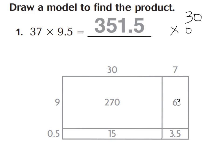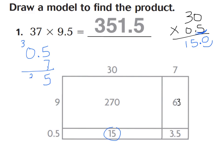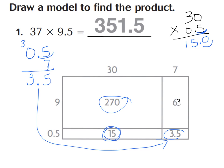9 times 7 is supposed to be 63, but my model shows only 6 — if yours does that, they might have made a typo, so just go ahead and make a little 3 right there. Our answer should have 1 place in the tenths, so that shows 15 wholes. Now for 7 times 5 tenths: 7 times 5 is 35, carry the 3; 7 times 0 is 0 plus 3 is 3 wholes, giving us 3 and 5 tenths. Then add up all your partial products to get 351 and 5 tenths.